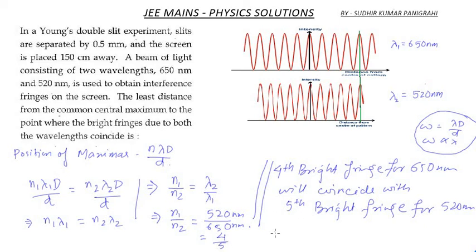So the least distance is calculated as 4 × 650 × 10⁻⁹ × 1.5 divided by 0.5 × 10⁻³, which gives us a solution of 7.8 millimeters.